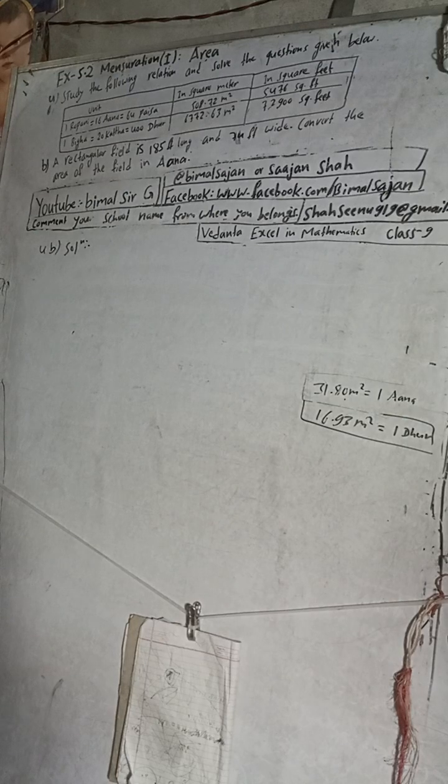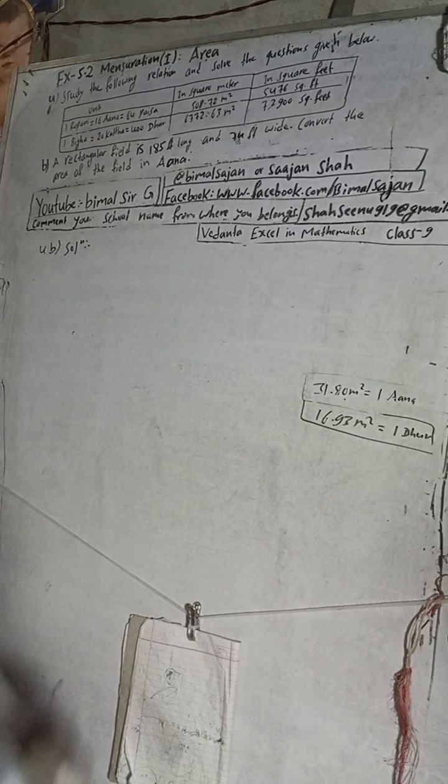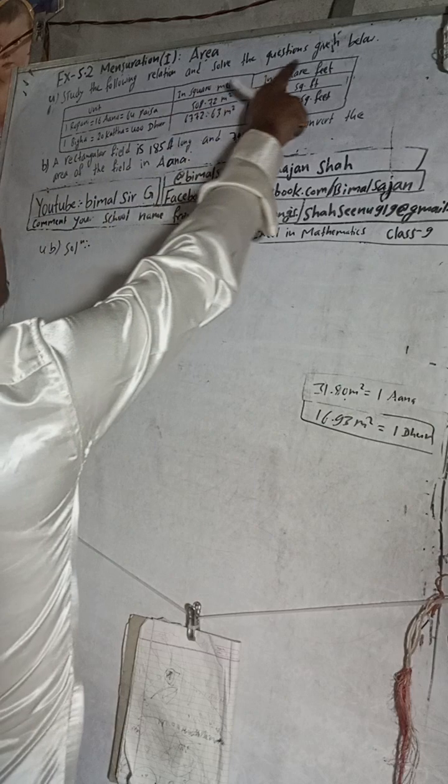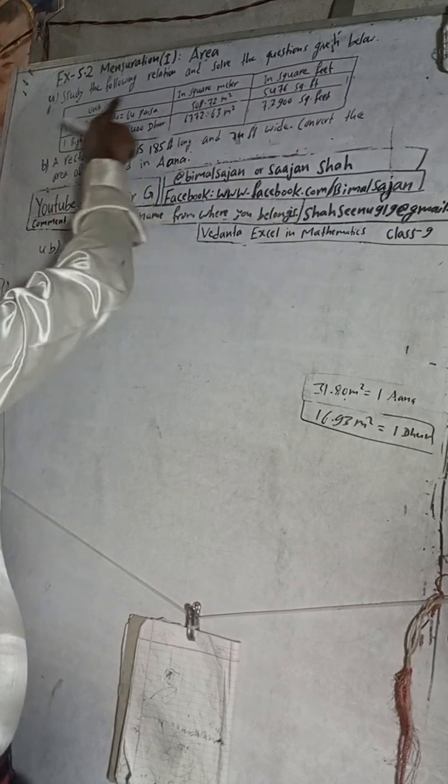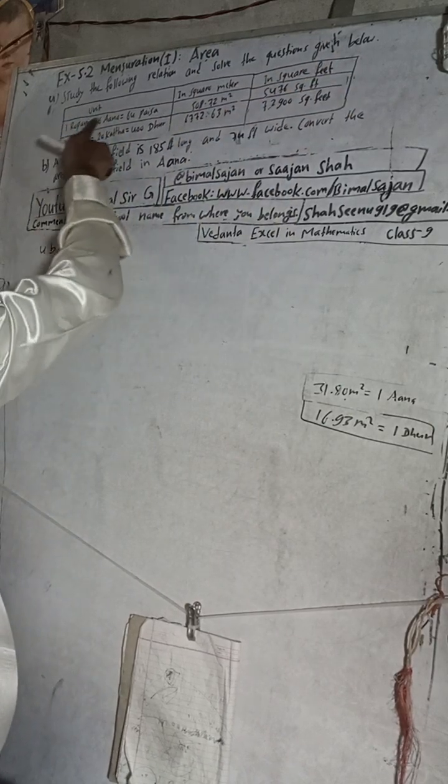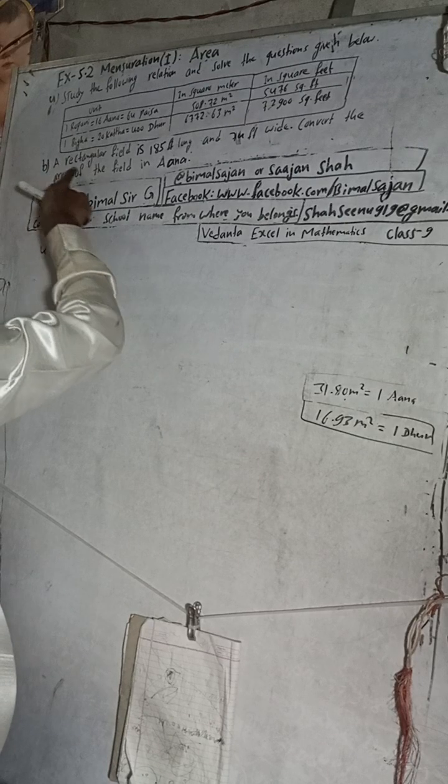Hi class 9 and 10 students, welcome back to Bimal Surgery YouTube channel. This is question number 4b, exercise 5.2, mensuration, first part area, Vedanth Excel in Mathematics class 9. The question is here: study the following relation and solve the questions given below. This is the table for conversion.